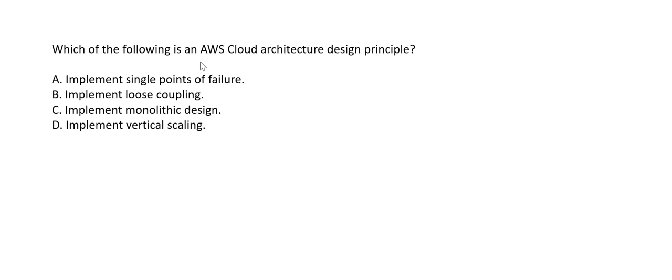Twelfth question: which is an AWS cloud architecture design principle? Implementing a single point of failure is never recommended — if one failure takes down everything, that's wrong. Loose coupling is correct — if one component fails, others remain operational. Monolithic design is wrong. Vertical scaling (upgrading the same server) is not a cloud best practice; horizontal scaling is preferred. The correct answer is implement loose coupling.